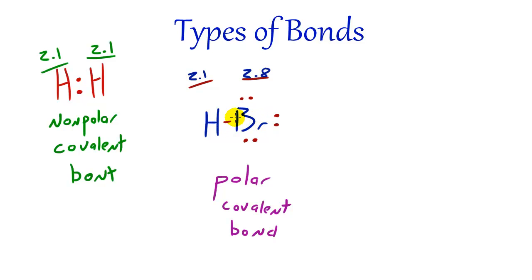So pretty much they would tend to gravitate towards the bromine more. They are more likely to be gravitating around the bromine rather than the hydrogen because the bromine has a stronger electronegativity, a stronger pull. And we call this a polar covalent bond.